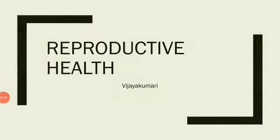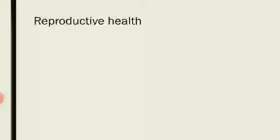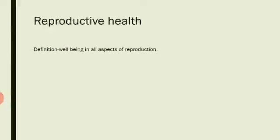Today I will start a new chapter on Reproductive Health. Reproductive health is defined as well-being in all aspects of reproduction — physical aspects, emotional aspects, and social aspects. When a reproductively healthy individual exists, this also results in a reproductively healthy society.